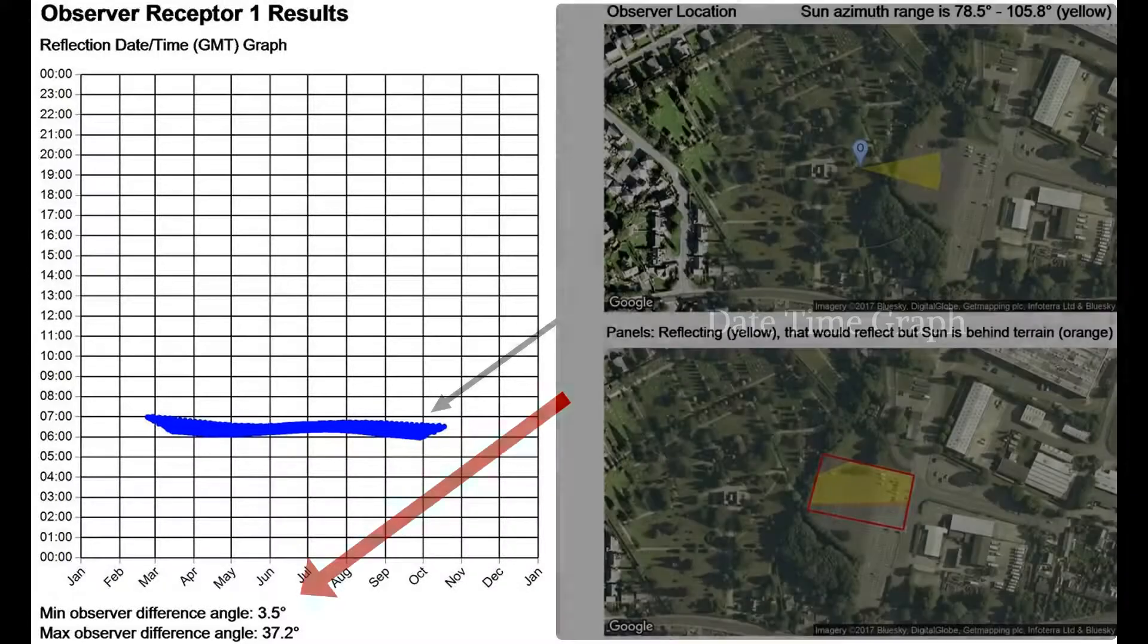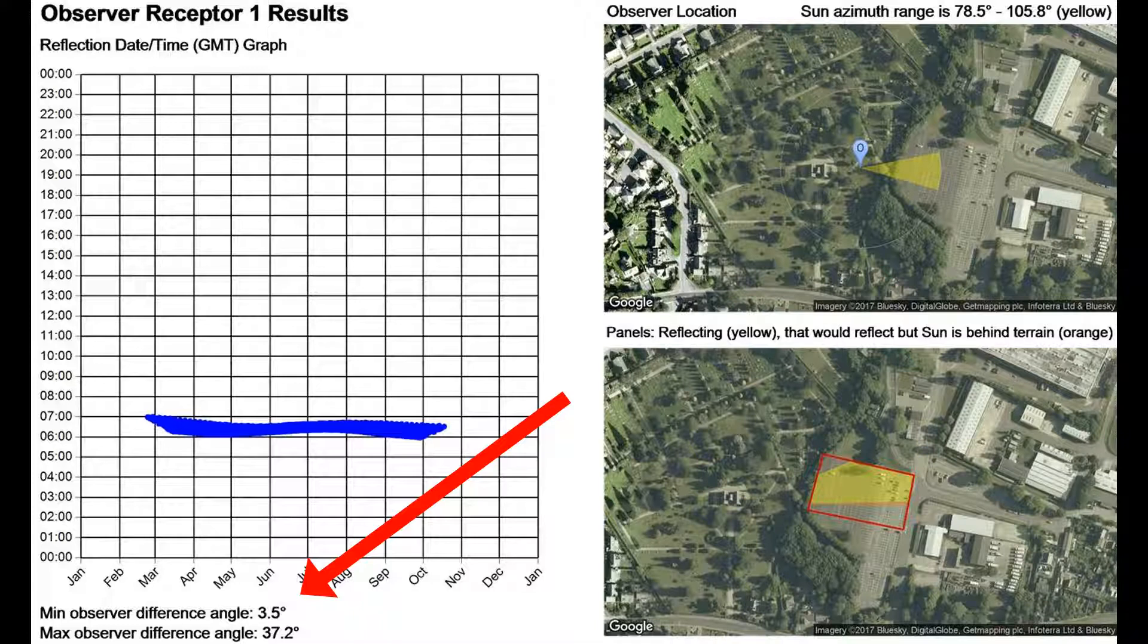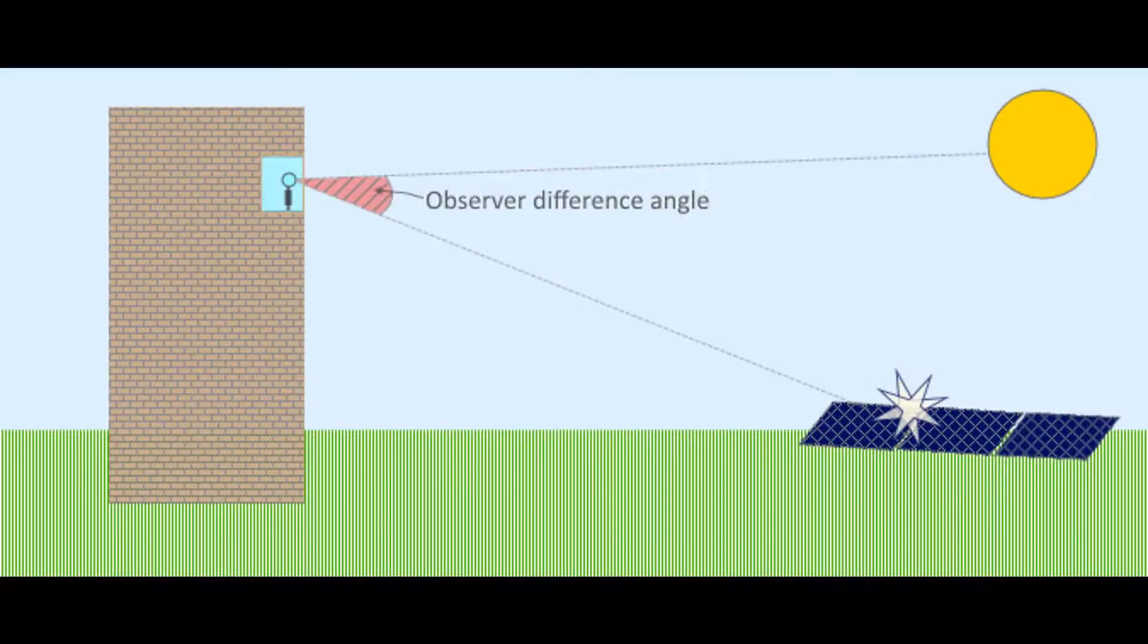The minimum and maximum difference angle, stated at the bottom of the chart, shows the vertical angle range from a receptor's perspective between the sun's location and the reflection from the solar panel. This is illustrated in the current slide.